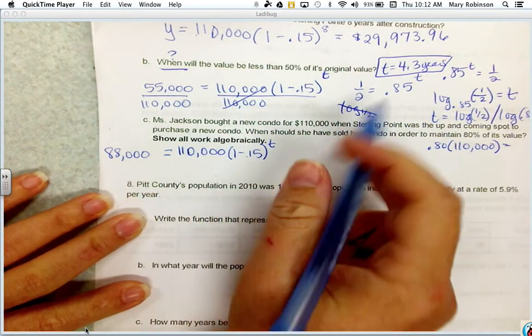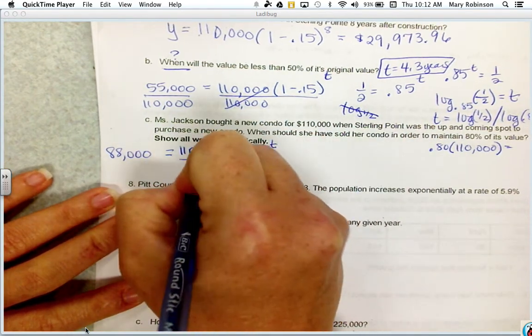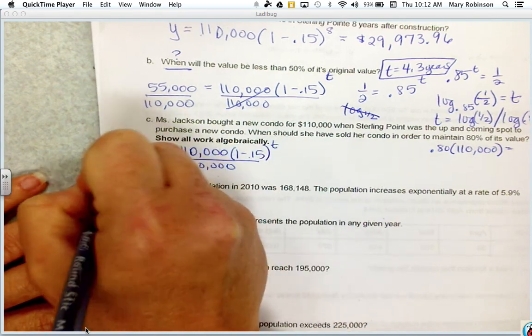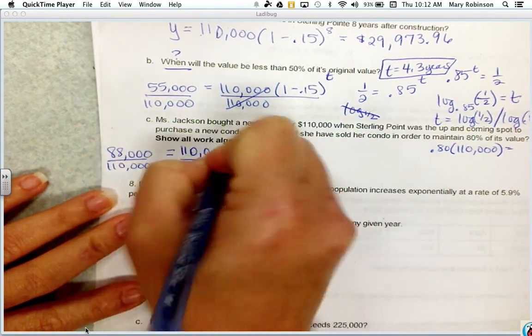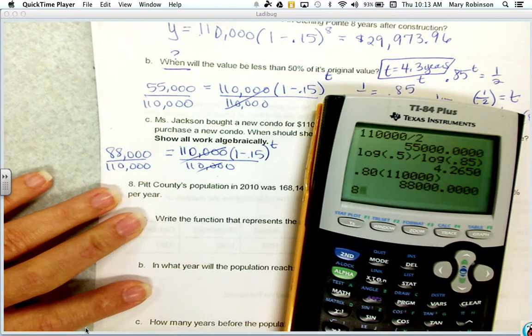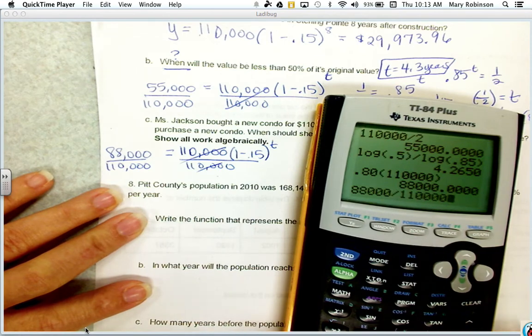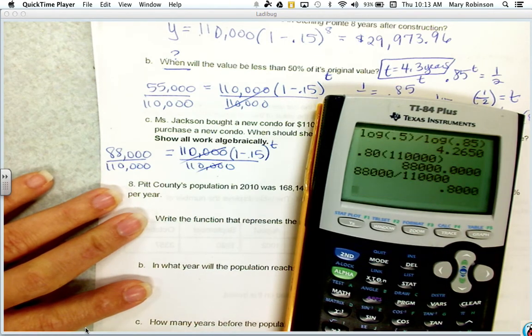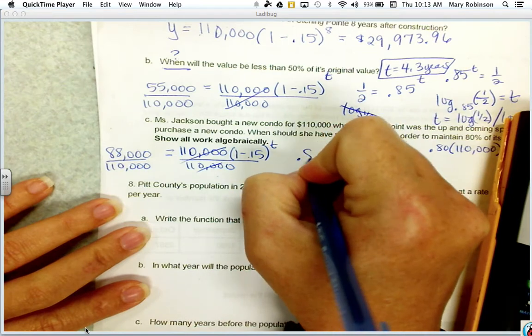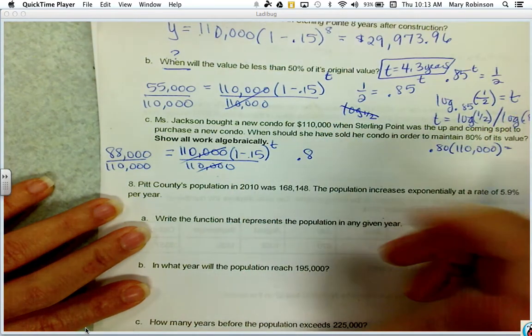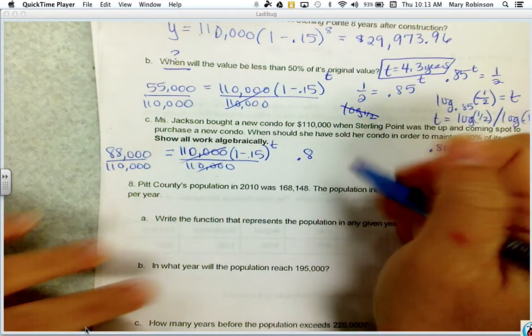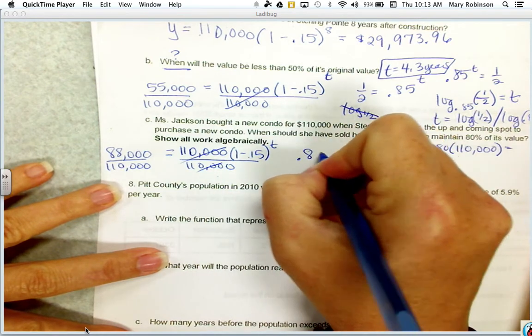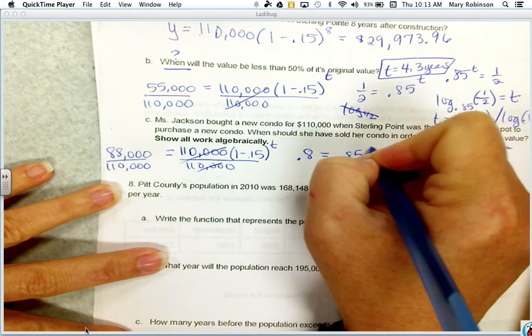You can also put this expression here if you like. And then we just want to go about solving it the same way we did before. So if we do $88,000 divided by $110,000, that would be 0.8, which should make sense because we want 0.8 or 80% of its value, equals 0.85 to the t power.